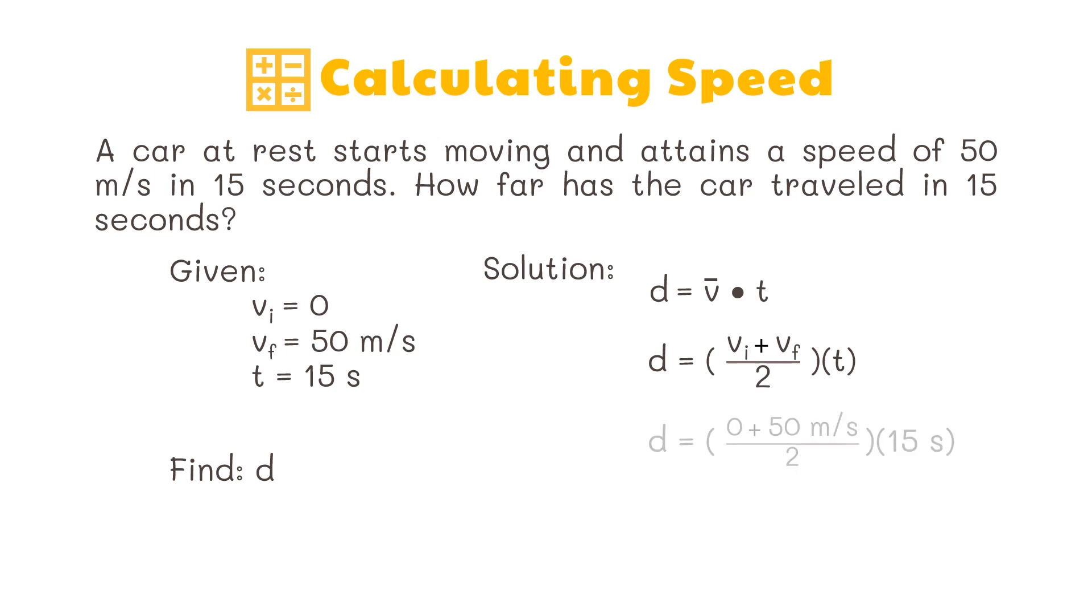We now have 0 plus 50 meters per second divided by 2, which is equal to 25 meters per second. We then multiply this to 15 seconds. We can cancel out common units and we now have the distance traveled by the car, which is 375 meters.